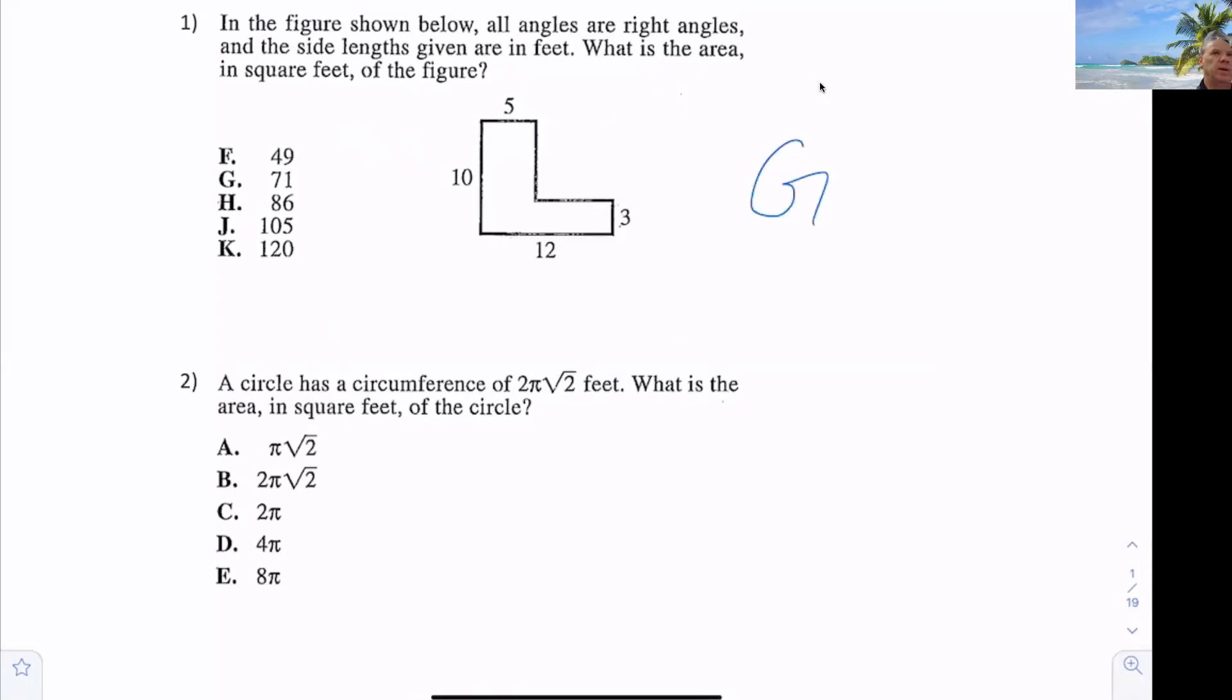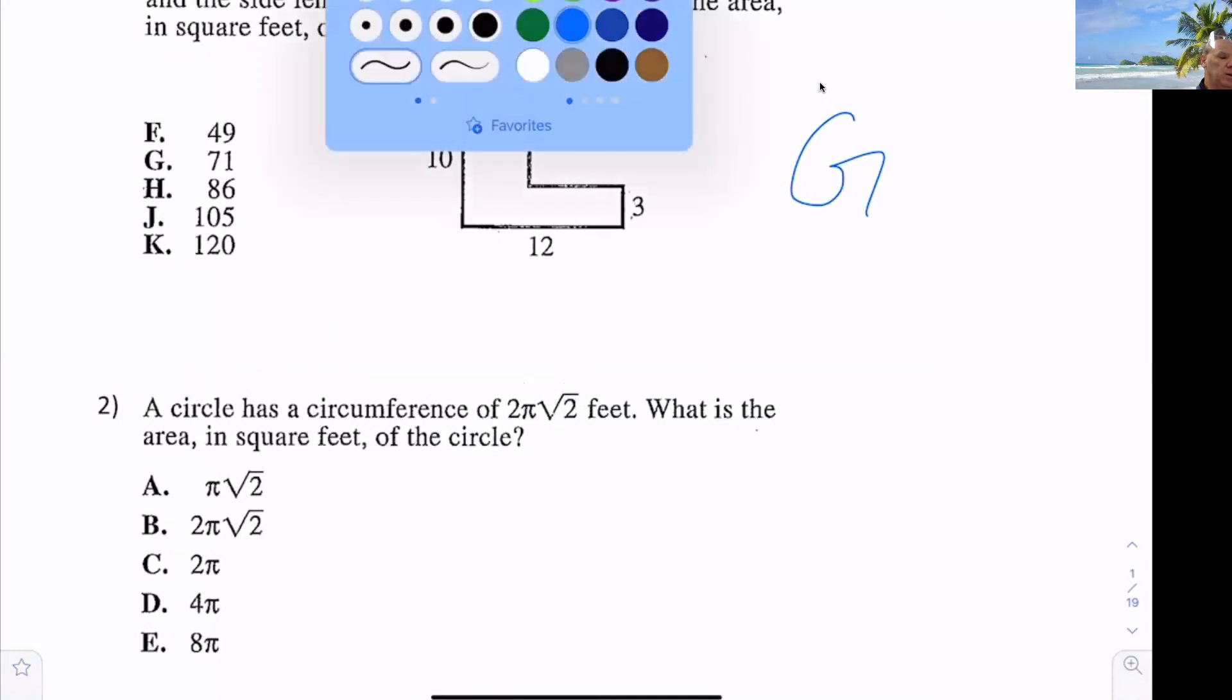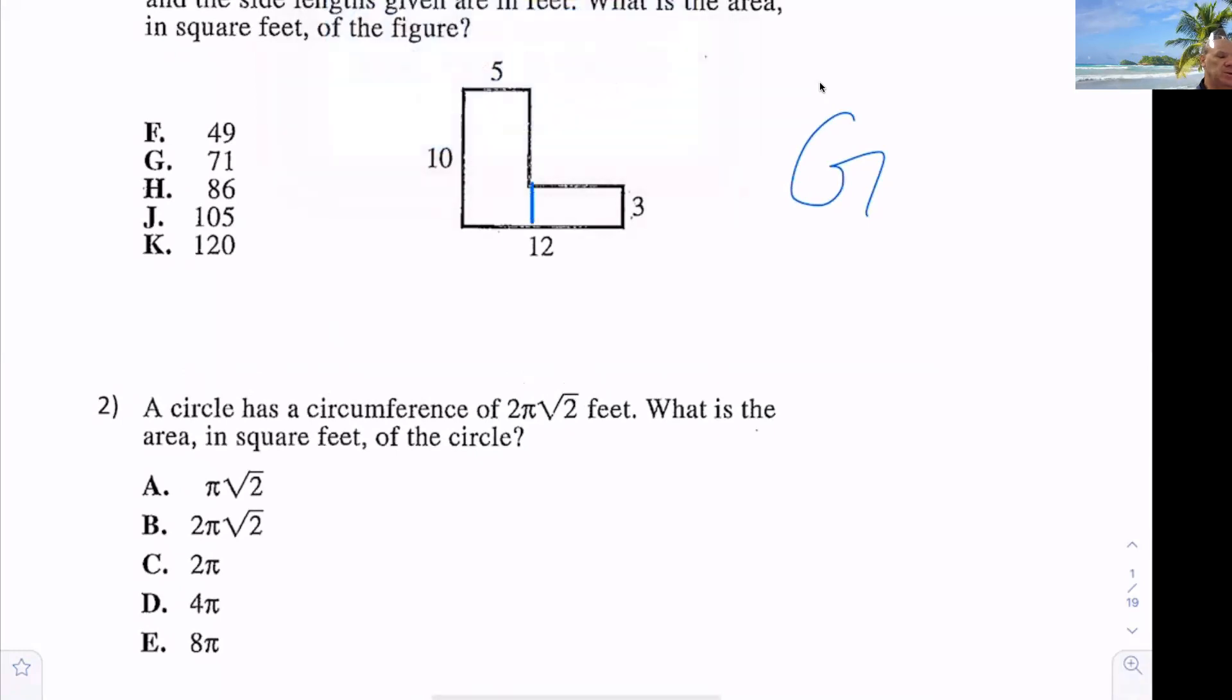Now, one way, just to make sure, because I like to show you ways of thinking about it. Most people, what they do is they draw and cut this into two rectangles, correct? But for me, the easiest way is just to say it's one giant rectangle and another rectangle is cut out.